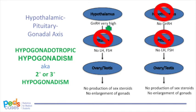Alternatively, there may be a pathology in the hypothalamus and/or pituitary. The central command of the HPG axis is destroyed or not functioning properly. Because we cannot generate gonadotropins LH and FSH, there is no production of sex steroids and no enlargement of gonads downstream — a state of hypogonadism. We expect to see low levels of gonadotropins in the blood, so we call this condition hypogonadotropic hypogonadism, also known as secondary or tertiary hypogonadism, depending on whether the deficiency occurs at the level of the pituitary or the hypothalamus, respectively.